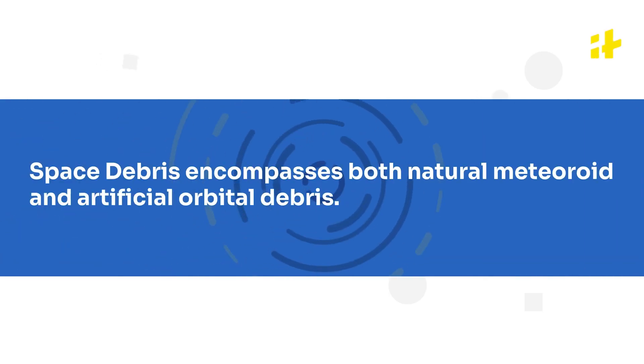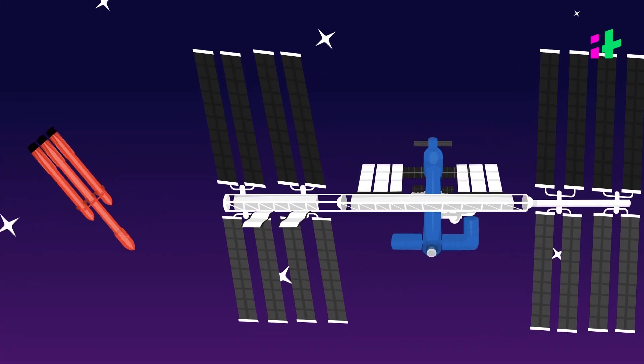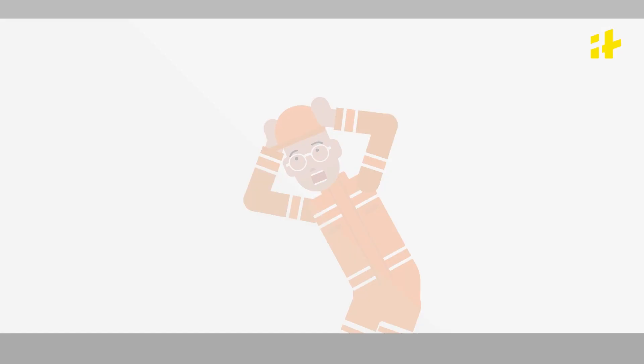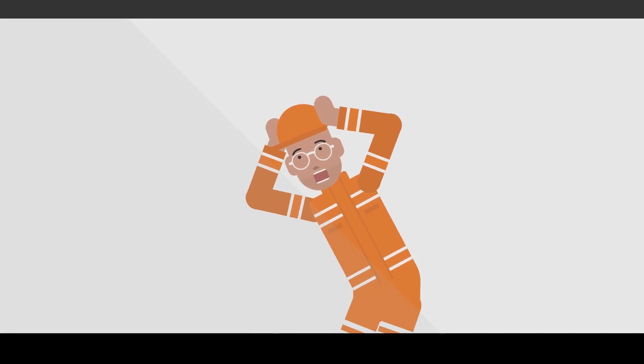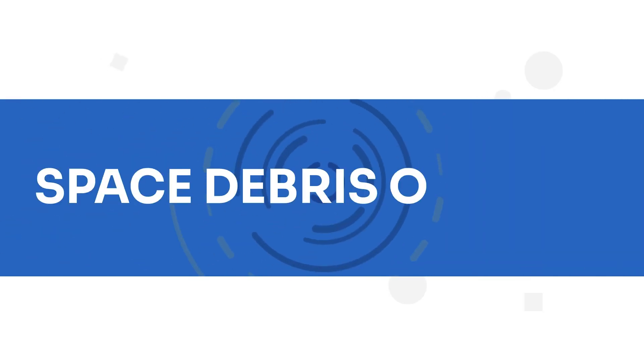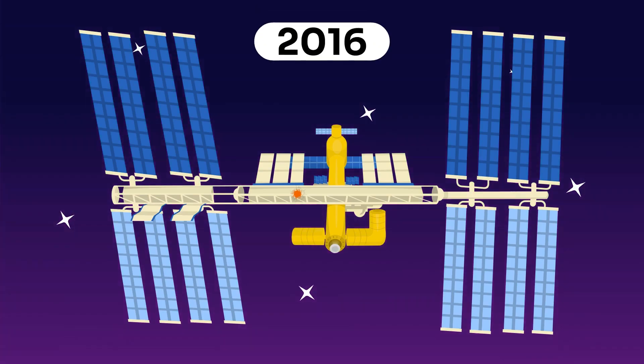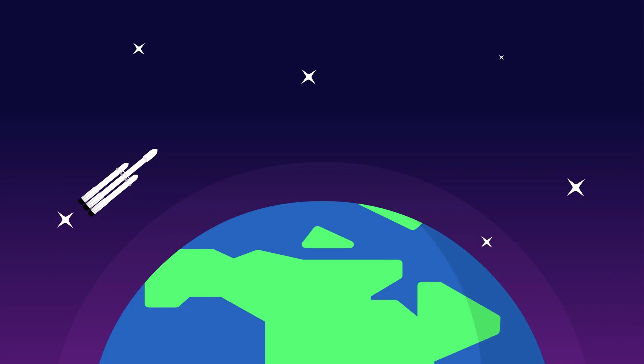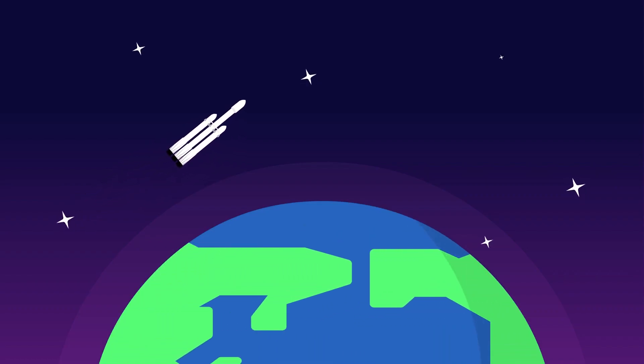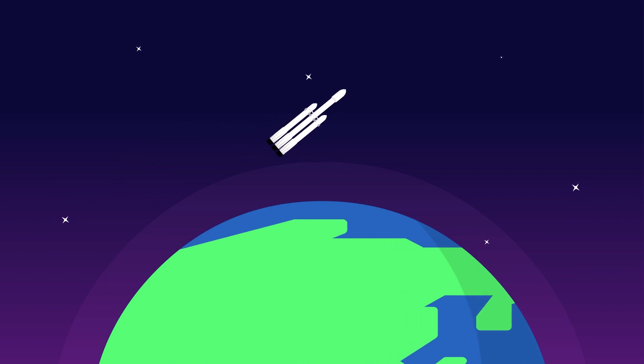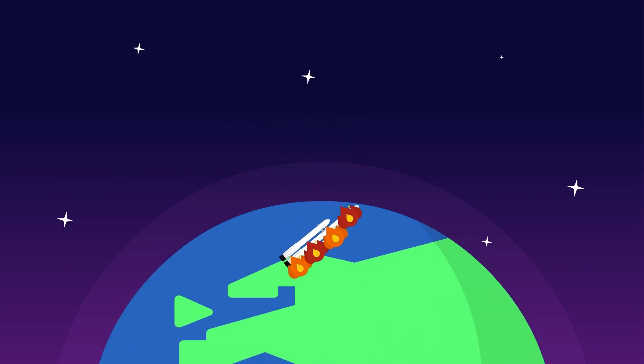Space debris encompasses both natural meteoroids and artificial orbital debris. Parts of a spacecraft that floats in space carrying a risk of collisions with satellites or a space station is what we call space debris or junk. In fact, a fleck of paint damaged a window in the ISS in 2016. These objects, particularly large ones, like spent rocket boosters, succumb to gravity and fall back to Earth.